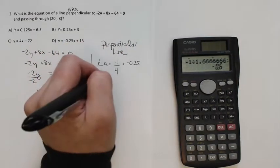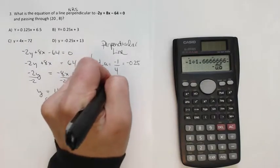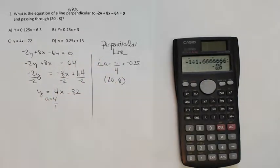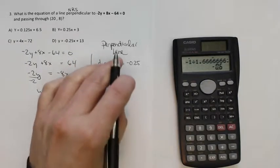And now, because we know that it passes through the 0.28, 20 comma 8, we can get the equation of this new line.